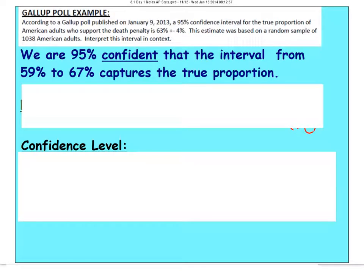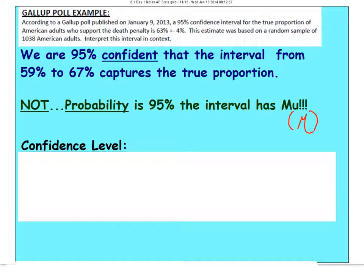I will tell you, you need to know how to interpret a confidence interval in context. Memorize this format. The one word you never, ever want to use with a confidence interval is probability. It is not the probability. Do not say that the probability is 95% the interval has our mu or has our population. It is not probability. I'm 95% confident. On the actual AP exam, you will probably see a multiple choice question asking you to define it. You're going to see them use probability for definition of confidence interval, and it's wrong.